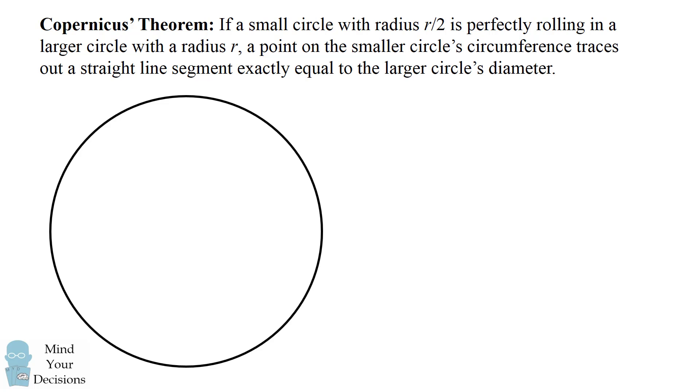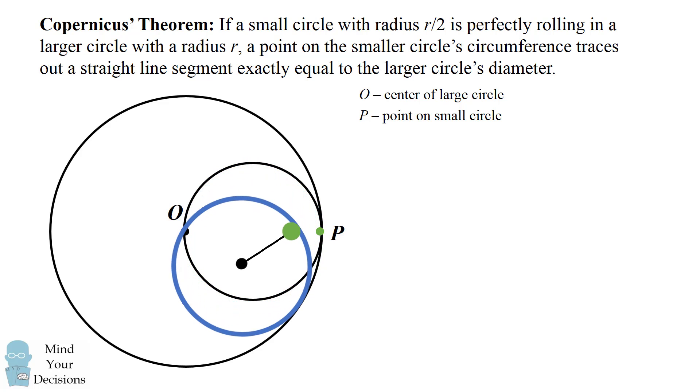So we have a large circle with the center point O. We'll consider a smaller circle that has half of its radius. We're going to trace where this point P in the smaller circle traces out. So we have this smaller circle, and we can imagine letting it roll for a little bit. So we now need to see where is this new green point.